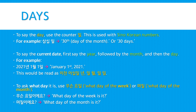To ask someone what day it is, use either 무슨 요일, meaning 'what day of the week', or 며칠, meaning 'what day of the month'. So you can ask: 무슨 요일이에요? — What day of the week is it? Or: 며칠이에요? — What day of the month is it?